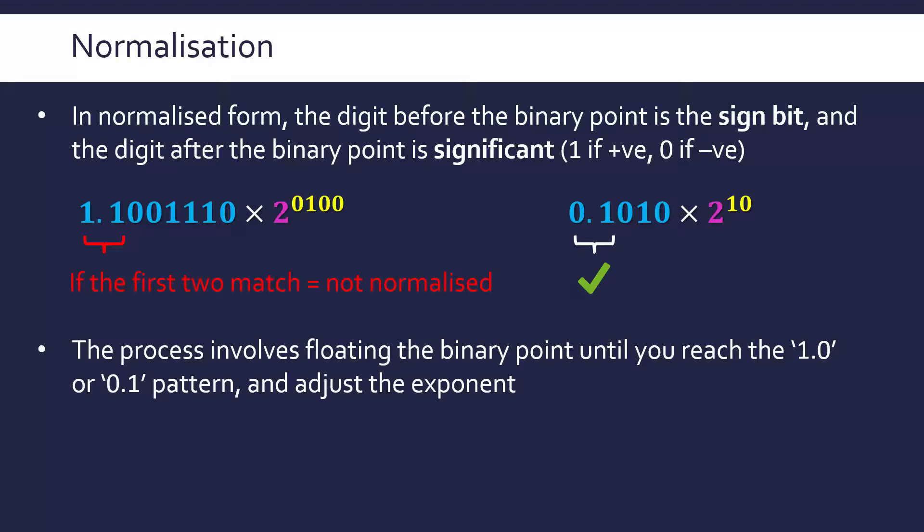So just to give you the general rule. For example, we need to fix this by floating our binary point until we reach the 1.0 pattern or the 0.1 pattern, and then we adjust the exponent to reflect this floating, this shift.